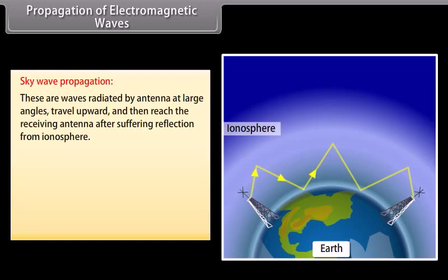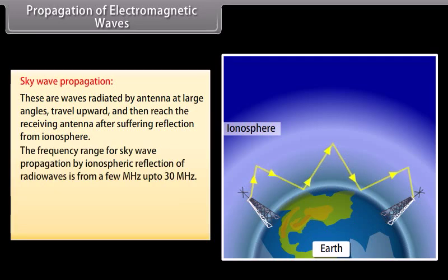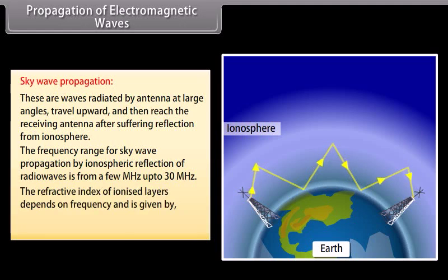Sky wave propagation: these are waves radiated by an antenna at large angles, traveling upward and then reaching the receiving antenna after suffering reflection from the ionosphere. The frequency range for sky wave propagation by ionosphere reflection is from a few megahertz up to 30 MHz. The refractive index of ionized layers depends on frequency and is given by: √(1 − 81/F²).